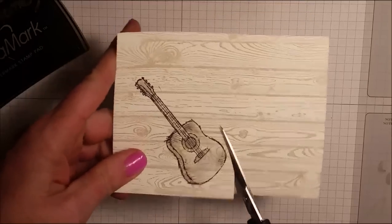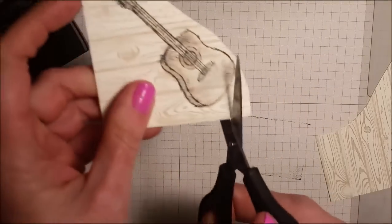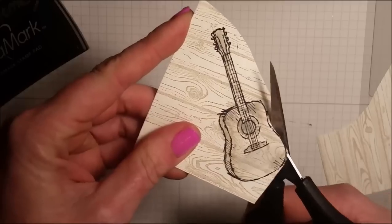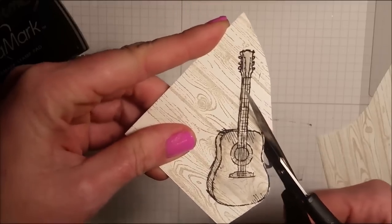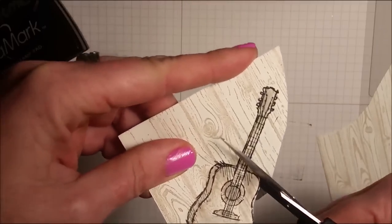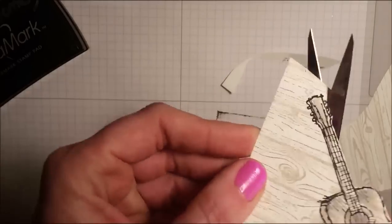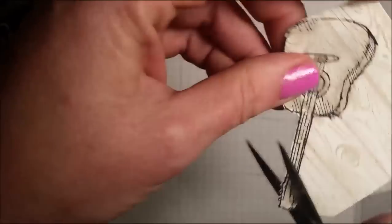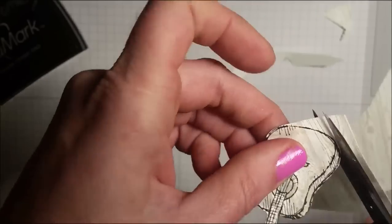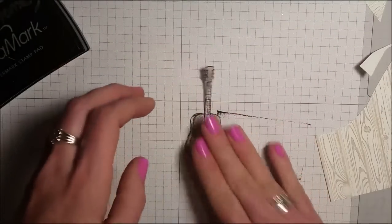All right, so I'm going to cut this out. Now you can use stamp sets that have coordinating framelits and of course your framelits would do all the cutting. But there's no framelits for this one so we're going to trim it out with the paper snips. Okay so there's my guitar cut out.